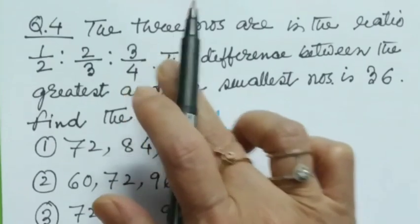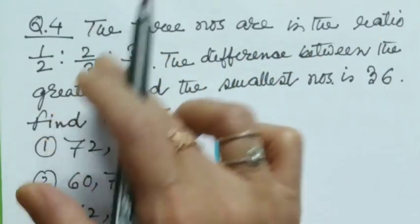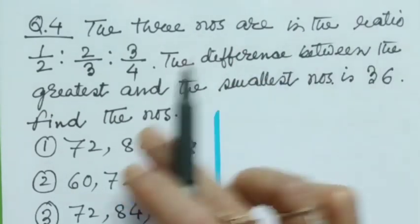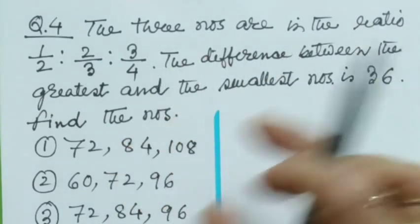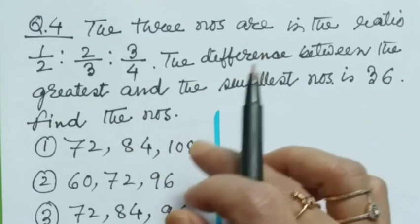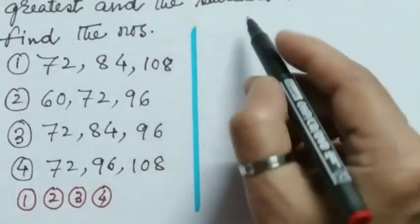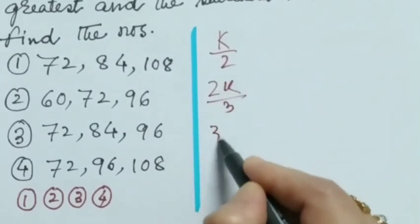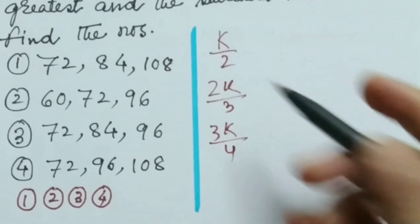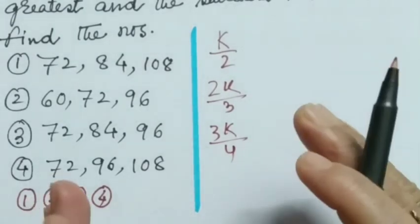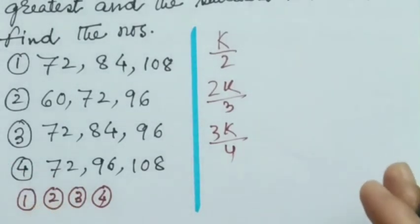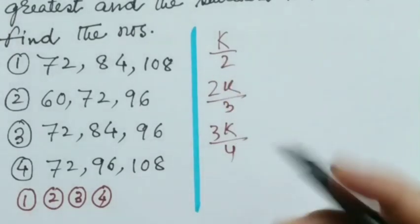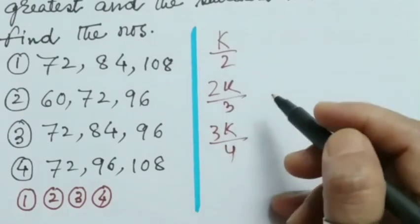Question number 4. The 3 numbers are in the ratio half is to 2 by 3 is to 3 by 4. The difference between the greatest and the smallest numbers is 36. Find the numbers. Let the numbers be k by 2 and 2k by 3, 3k by 4. k is a variable. And now dear children, to compare, we must convert them into equivalent fractions having same denominator. Here LCM of 2, 3, 4 is equal to 12.